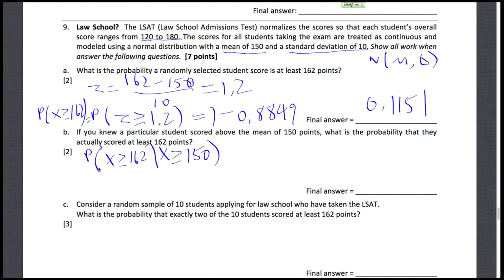Instead of a universe where anything can happen — say a test score from 120 to 180 — we're now in a universe where you can only score above 150 points. So what we want is the probability that X is more than 162, scaled by the probability that we're in the X is more than or equal to 150 universe.